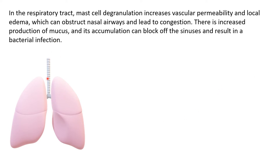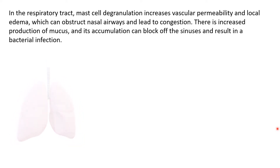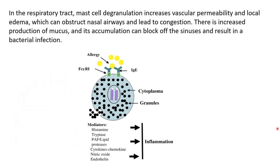There is increased production of mucus and its accumulation, which can block off the sinuses and result in bacterial infection. Now let's look at how this degranulation occurs in mast cells. What you see here is a mast cell.